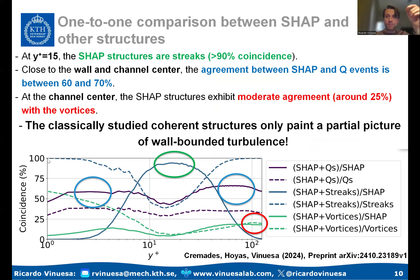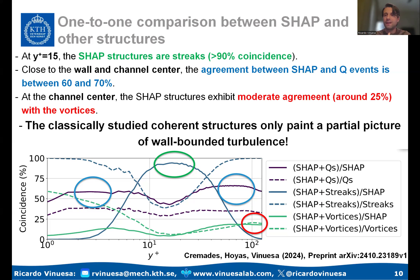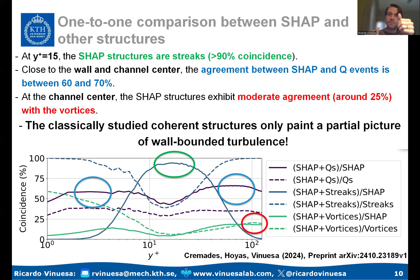The percentage of point-by-point agreement between SHAP structures and classical structures, averaged over the whole dataset, is plotted versus inner-scale wall-normal location. At y⁺ = 15, the SHAP structures are essentially streaks — agreement exceeds 90%. This agreement with streaks drops to near zero both at the wall and near the channel center. Close to the wall, there is 60–70% agreement between SHAP and Q events (sweeps). Near the channel center, there is again 60–70% agreement with Q events (ejections) and about 25% agreement with vortices.